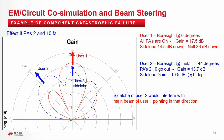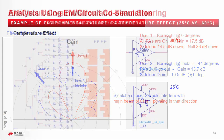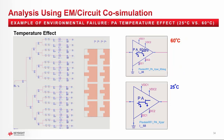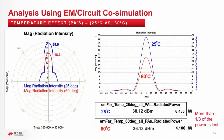Now let us investigate the effect of temperature on our system. I ran the system simulation with the PAs at 25 degrees and again at 60 degrees. The PAs could get hot due to their thermal performance and also due to surrounding temperature rise. We see more than one-third of the power is lost due to the rise in temperature. The radiation intensity dropped from 29 to 18 watts per steradian, and the total radiated power dropped from 6.48 watts to 4.1 watts.